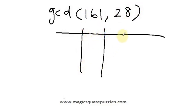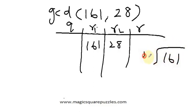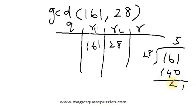We set up columns: Q, R1, R2, and R. The highest number between 161 and 28 is 161, so put 161 under R1 and 28 under R2. Now divide 161 by 28 — it goes five times, giving 140, with a remainder of 21. So quotient Q is 5 and remainder is 21.